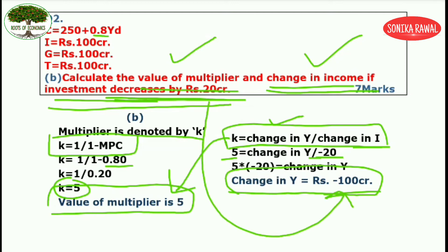So here students, you can see that a 20 crore decrease in investment leads to a 100 crore fall in income — which is 5 times — and that is the importance of the multiplier. This was question number 2.